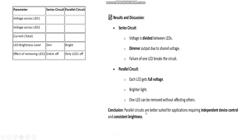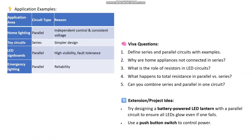The conclusion is that parallel circuits are better suited for applications requiring independent device control and consistent brightness. Applications include home lighting, LED display boards, and emergency lighting — all using parallel circuits. Only decorative string lights use series circuits.